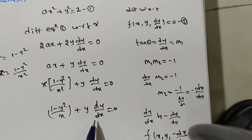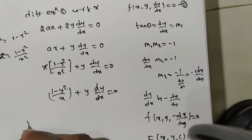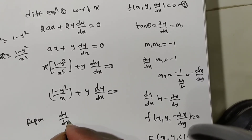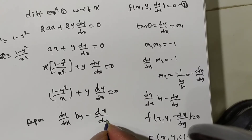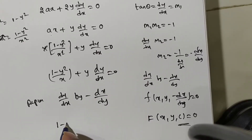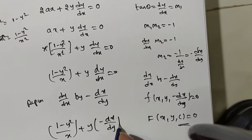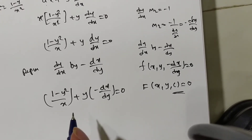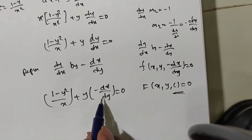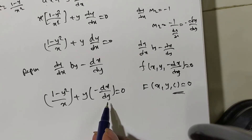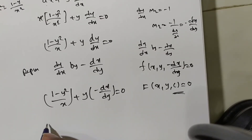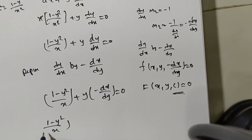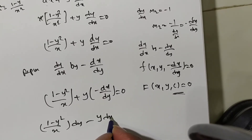To find the orthogonal trajectory, replace dy/dx with −dx/dy. The equation becomes (1 − y²)/x + y·(−dx/dy) = 0. Simplifying and moving terms to the right side: (1 − y²)/x · dy − y · dx = 0. For the variable-separable method, dx and dy should be in the numerator with matching variable coefficients.